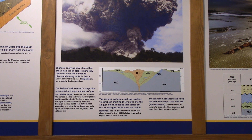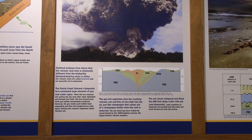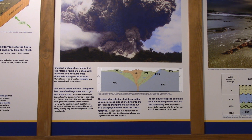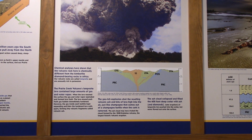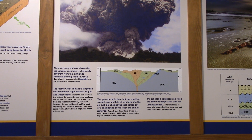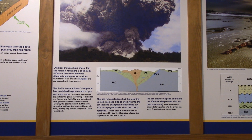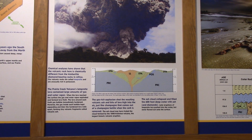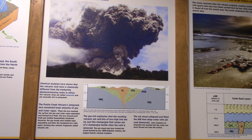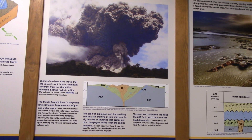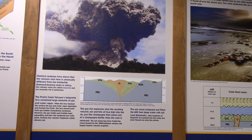The ash cloud collapsed and filled the 600-foot deep crater with ash and diamonds. Later eruptions of lamporite lava pushed into the crater but never flowed out onto the surface. So at the Crater of Diamonds, there were multiple pyroclastic events — it wasn't just one event that brought it to the surface.